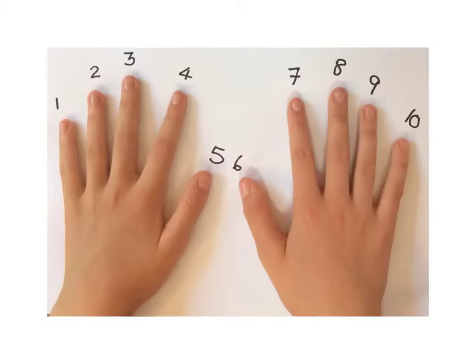What you do is you put your fingers out and you number them 1, 2, 3, 4, 5, 6, 7, 8, 9, 10 from left to right like that.